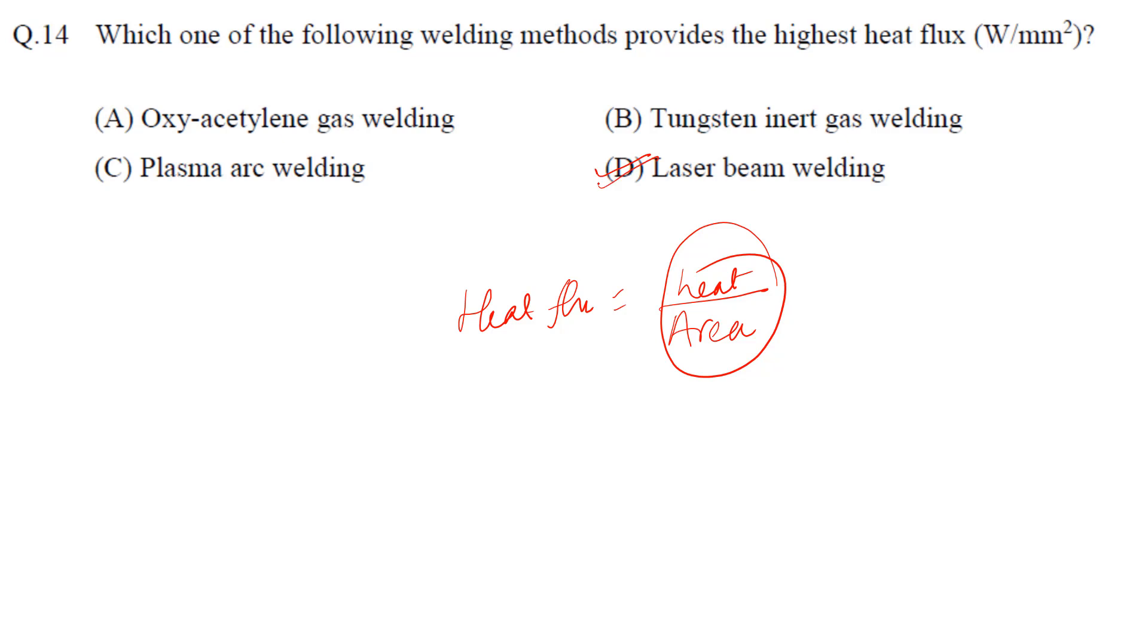So that's why laser beam welding will be your correct answer. If you compare others like tungsten inert gas, plasma arc, then you will see the heat flux is basically lower. Means if you see, after laser beam welding we will find plasma, then we will find tungsten, then we will find oxyacetylene gas welding.